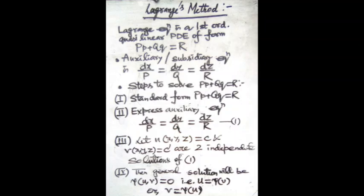This is the Lagrange equation. The auxiliary or subsidiary equation is: dx/P = dy/Q = dz/R. This is our auxiliary equation. Now, what is the method of Lagrange — how can we solve this equation?